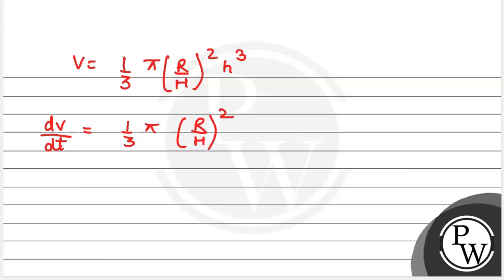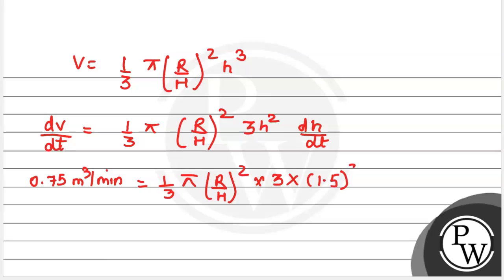Differentiating: dV/dt equals 1/3 π (R/H)² times 3h² times dh/dt. We have dV/dt equals 0.75 meter cube per minute.